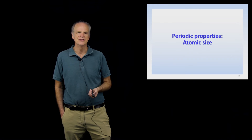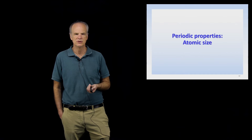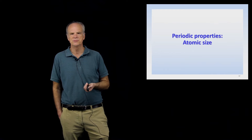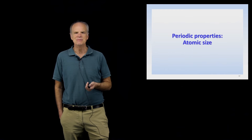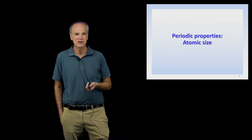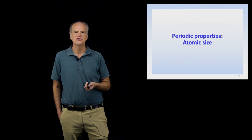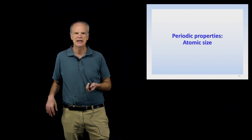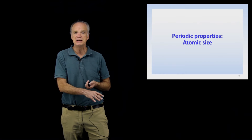Hey everybody, welcome back to chemistry. Now we're getting toward the end of this chapter and we want to look at something called periodic properties. The one we're going to look at in this presentation is the property of atomic size. But before we begin, let me talk a little bit about what a periodic property is. Periodic means repeating. So a periodic property is some kind of property of atoms that, as you go through the periodic table, tends to repeat itself.